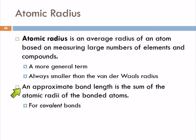For bond lengths, we can approximate the length of bonds by just adding the radii of the two atoms involved in that bond. That's what we do for covalent bonds.